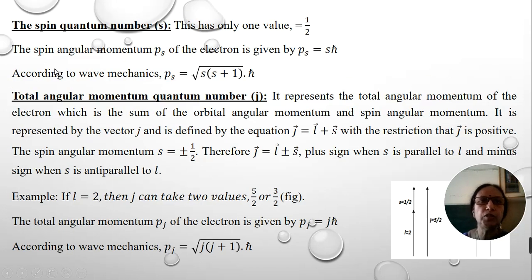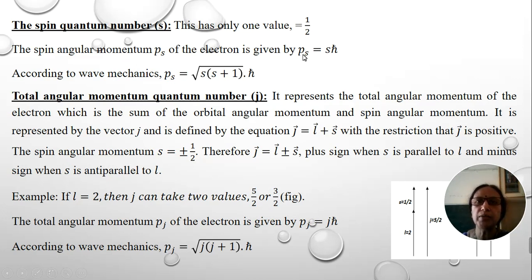The next is the spin quantum number, which always takes only one value: s = 1/2. Its magnetic moment is given by sℏ, and according to wave mechanics it is √(s(s+1)) ℏ.